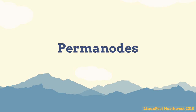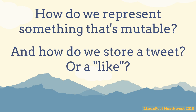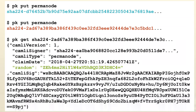We kept mentioning objects and permanodes. This addresses how you model something mutable in an immutable world — and also how to store something like a tweet that isn't a file. We have a concept called a permanode. Every time you run 'pkput permanode' or use the API or web UI or an importer, it creates a new random blob ref. Unlike echoing 'hello' which always gives the same blob ref, every run of pkput permanode gives you a new one.